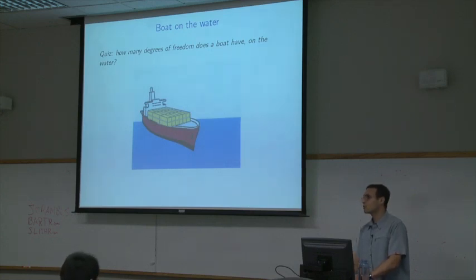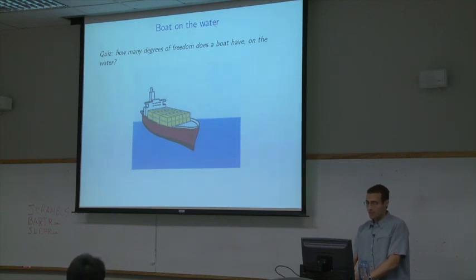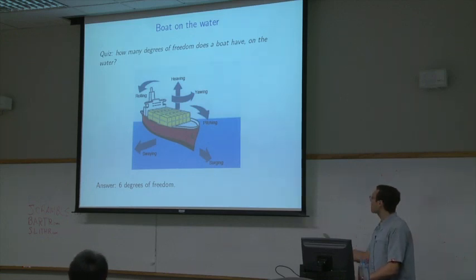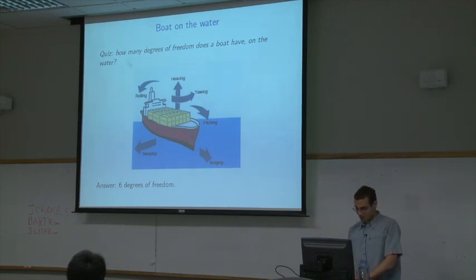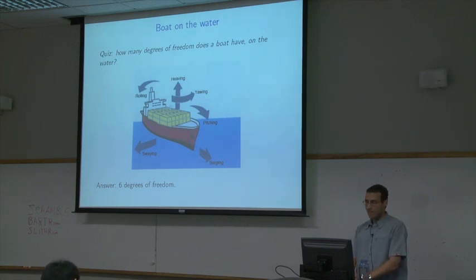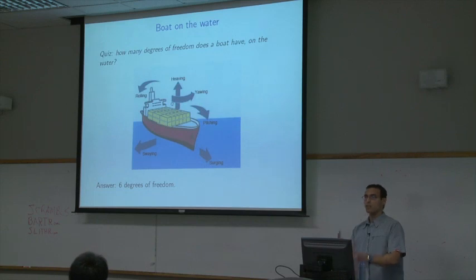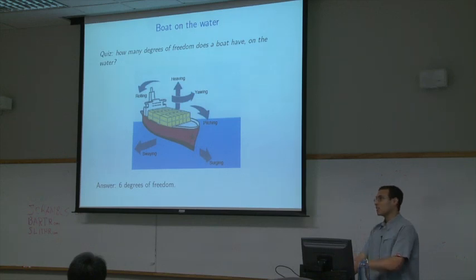How many degrees of freedom does a boat have on the water? It's a rigid boat on an open body of water. The answer is actually six. You can move forwards or backwards — sailors call that surging. Swaying is moving left or right. Heaving is moving up or down. There's also three tilts: rolling side to side, pitching forward and backwards, and yawing, which is the boat turning. If I know those six numbers, I can tell you exactly where the boat is.